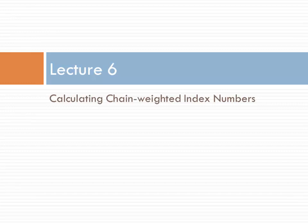You might be a little confused as to what a chain-weighted index number is. A fixed-weighted index number keeps the weight on each price constant forever — fixed in the base year. For a chain-weighted index number, we allow those weights to change over time. That's about all we've said so far about what a chain-weighted index number is.